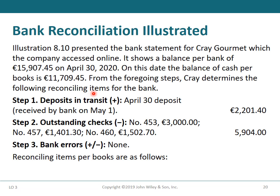Kerry determined the following reconciling items for the bank side. Step 1 — Deposit in transit: an April 30 deposit received by the bank on May 1. This deposit is recorded in the books but not in the bank statement, so it should be added to the bank statement balance: €2,201.40.